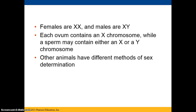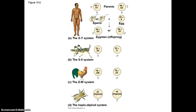Females have two X chromosomes; males have an X and a Y. Each ovum is going to contain an X chromosome, and the sperm can contribute either an X or a Y. There are other methods of sex determination in other animals, so remember that the X and Y chromosome system specifically applies to humans.